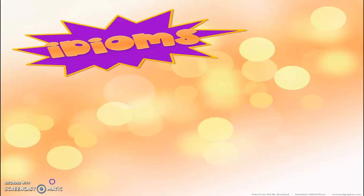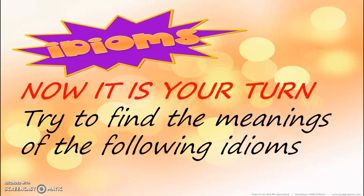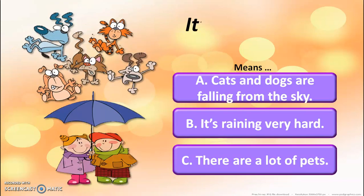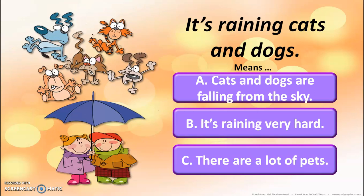Now it's your turn — try to find the meanings of the following idioms. First: 'it's raining cats and dogs.' What does it mean? Does it mean cats and dogs are falling from the sky? It's raining very hard or heavily? Or there are a lot of pets? I think you have chosen the right one.